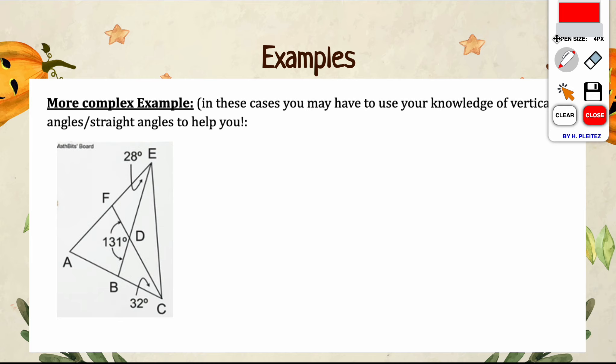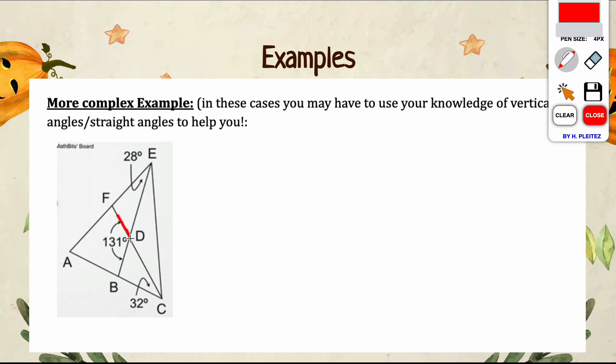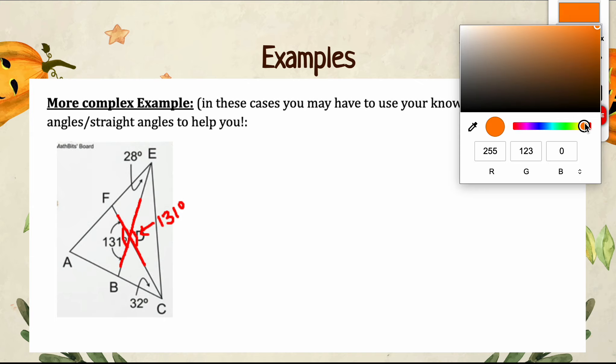This is where it might help to have highlighters or different colored pens or pencils because geometry is very visual, and you want to be able to digest these complex diagrams and make them a bit easier for your brain to understand. The X or the intersecting lines that I'm talking about are right here. Without even doing any work right now, I know that these two angles across from each other are congruent because those are vertical angles, so I can go ahead and fill this in as 131 degrees.